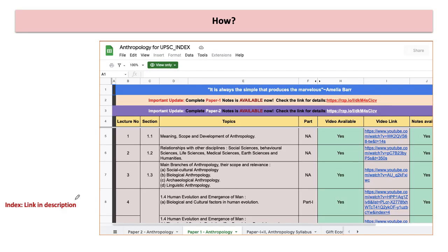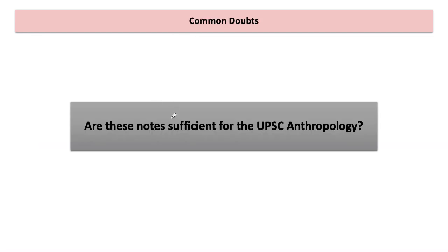If you want to know which lectures are covered and which notes are available, you can definitely check the link in the description. You will get this index. In this index, you can see which video is available or not. If it is covered in the video, it will be mentioned here. Like in this case, this is covered in one part. If you see Human Evolution and Emergence of Man, this is covered in different parts. In any part, whatever stuff is covered, the title is mentioned here so it becomes easier for you to navigate. Also, video links are mentioned here so you can directly click on this link and be redirected to that particular video. You can also do it from the playlist, but this is to make things easier for you.